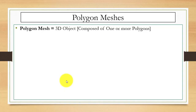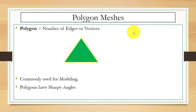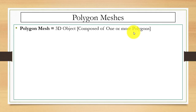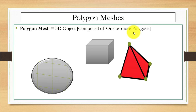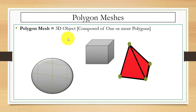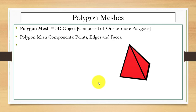A polygon mesh is a 3D object. It is a 3D object that is composed of one or more polygons. Here we have a 3D object — you can see this is a 3D mesh with three axes X, Y, and Z, as we discussed before. So a 3D mesh is a 3D object composed of one or more polygons.